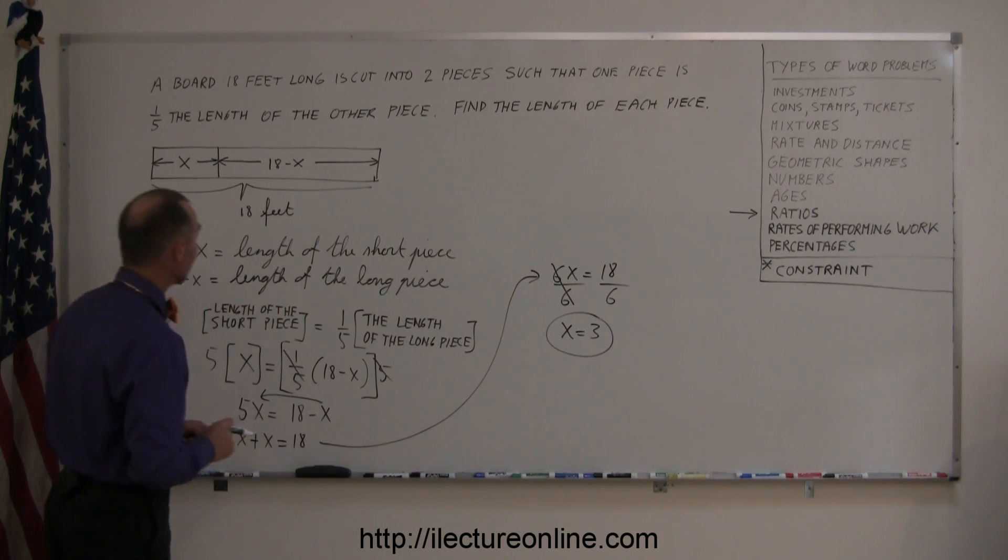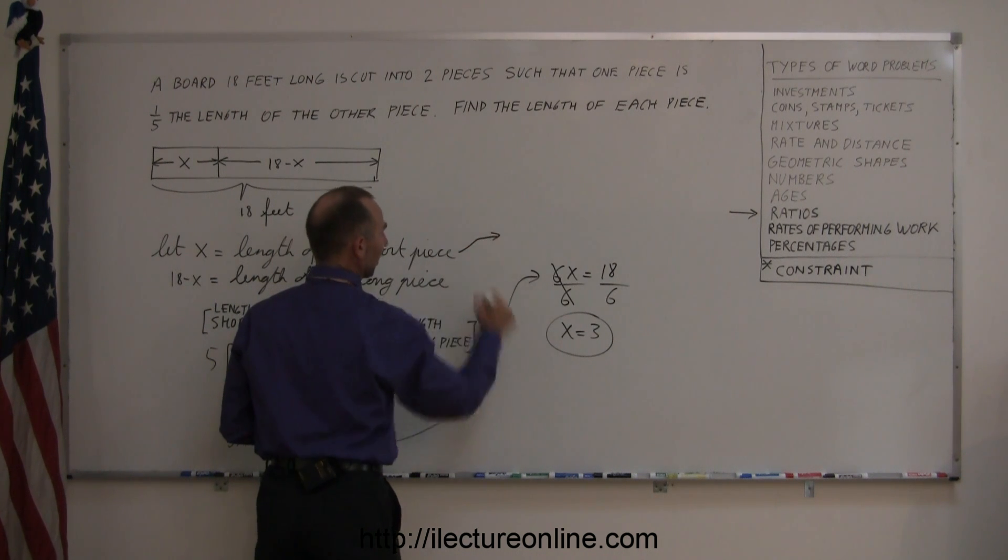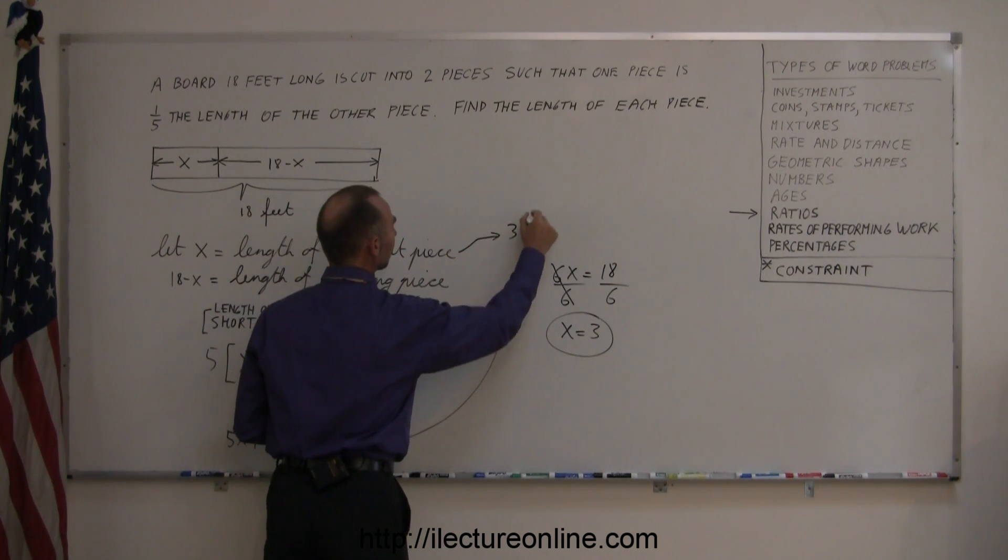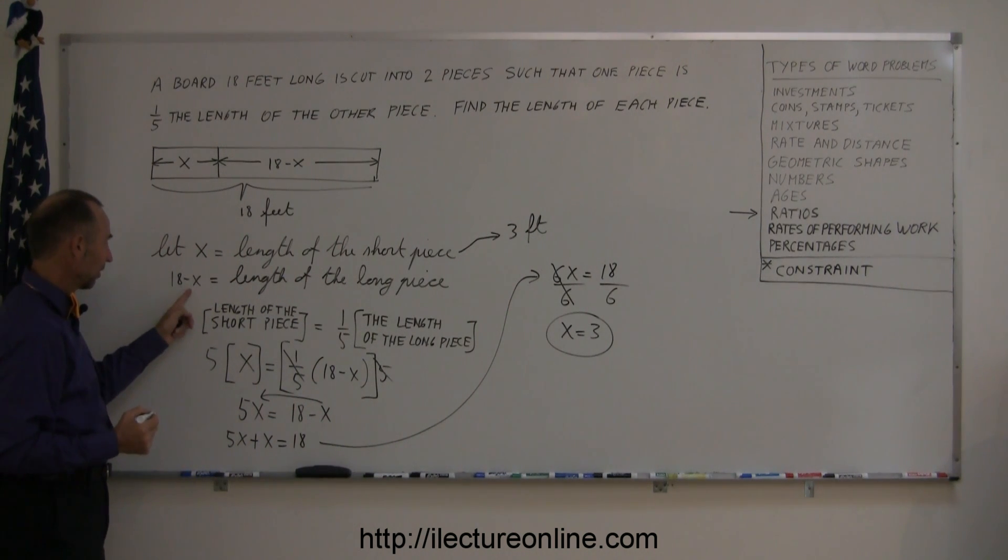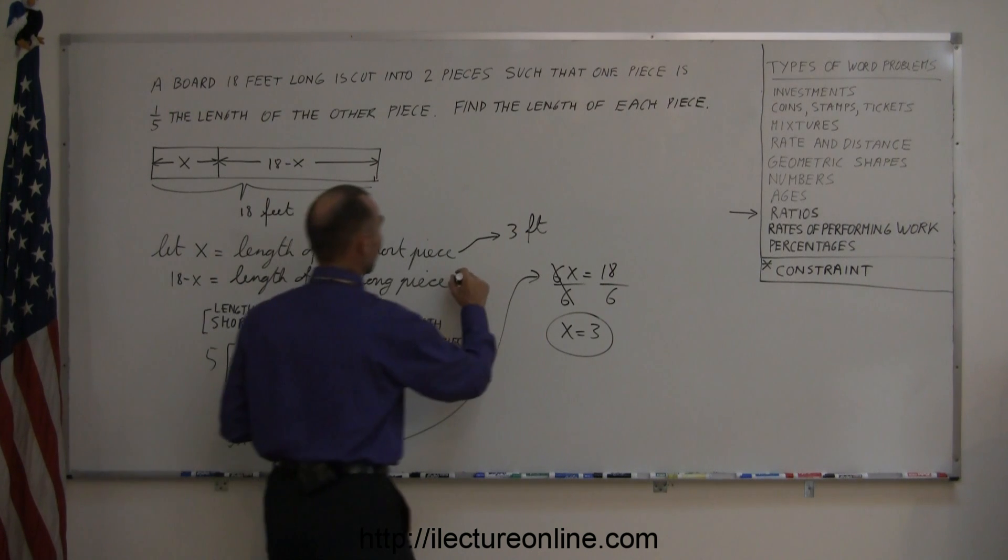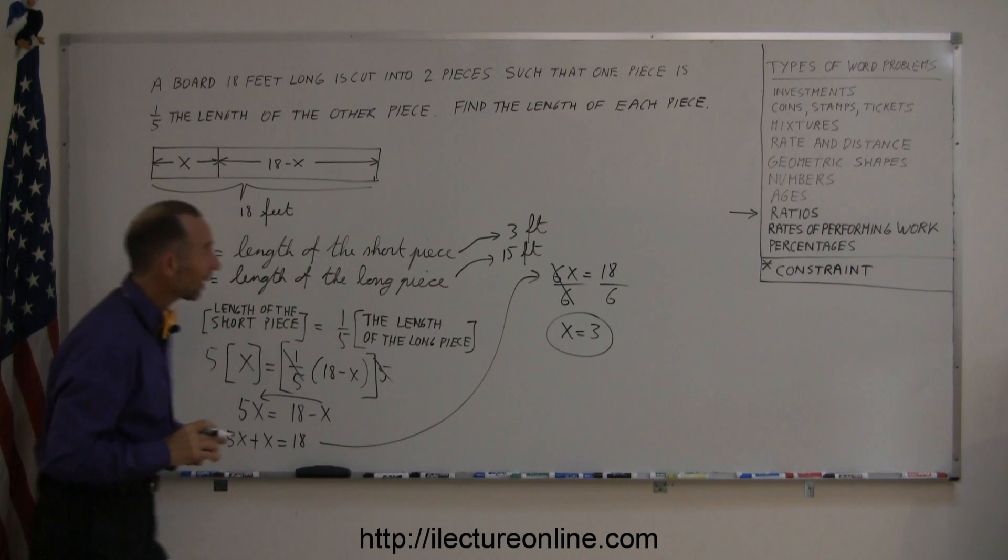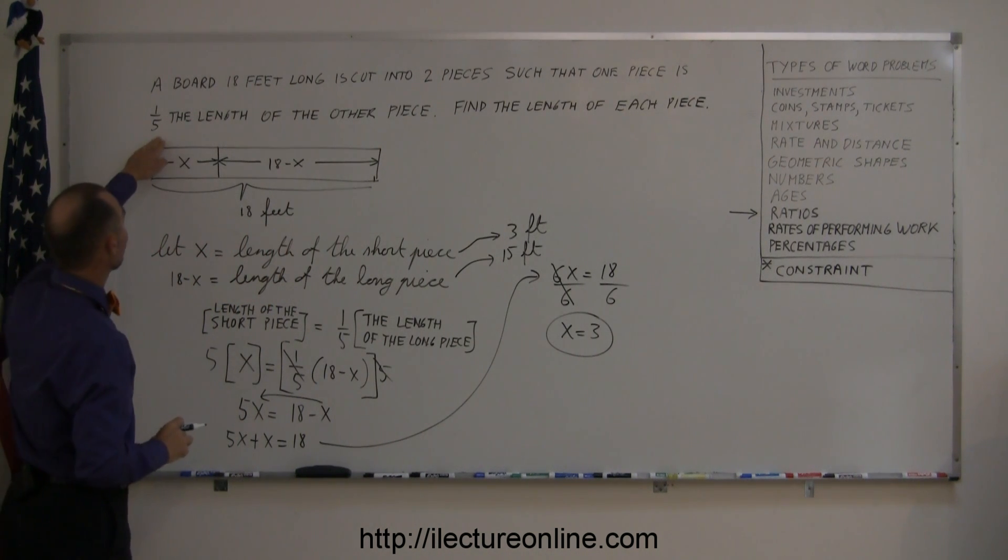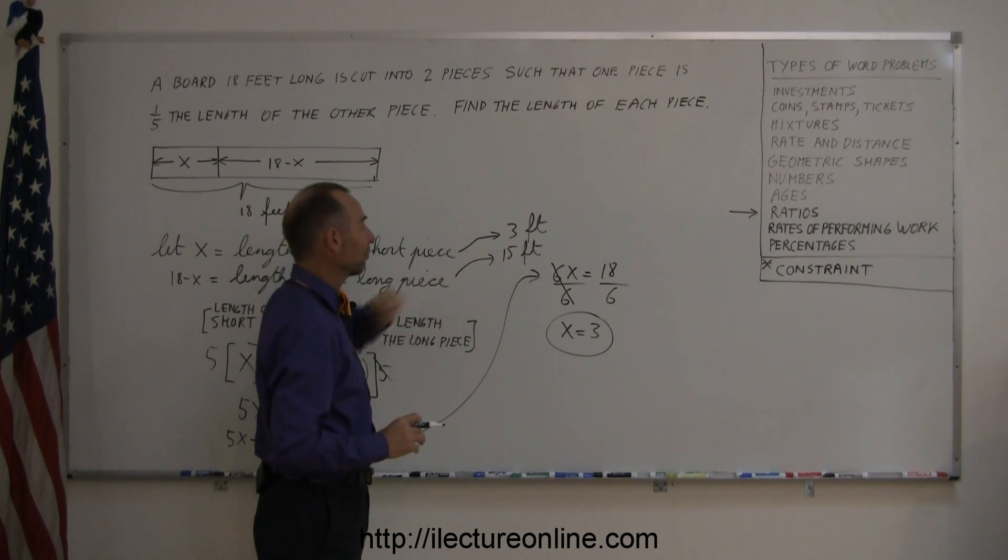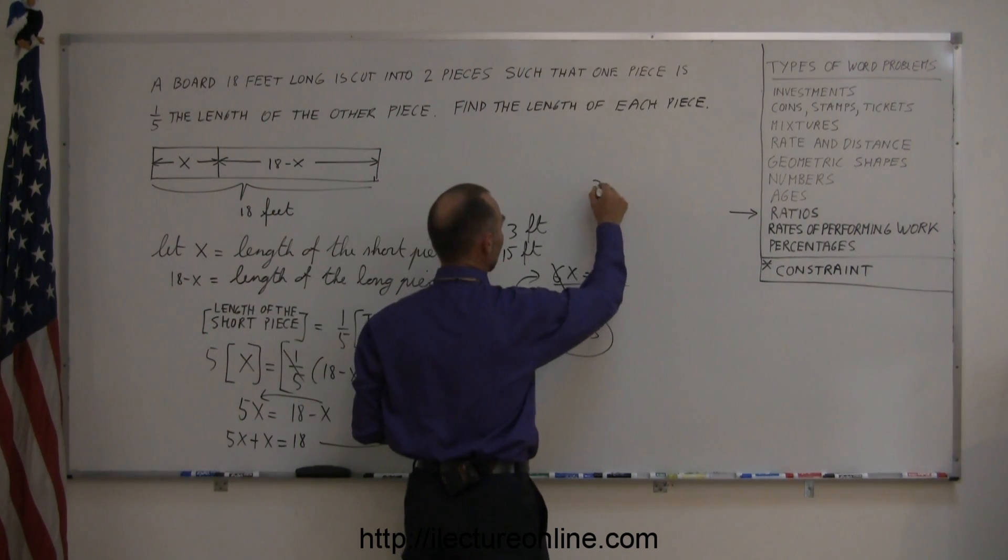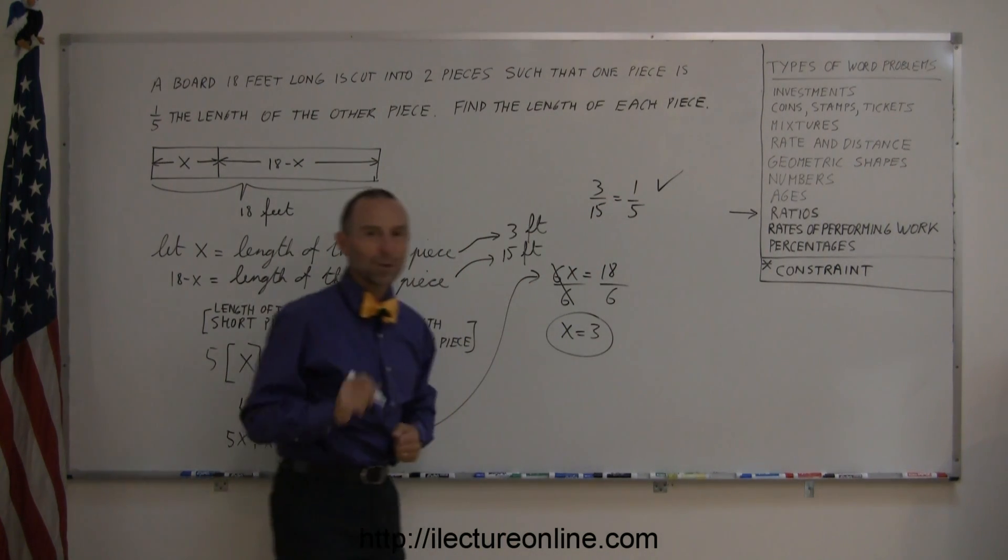Going back to our definition, since x represented the length of the short piece, that means the short piece was 3 feet long. And 18 minus x, since x is 3, that's 15, so 15 feet should be the length of the long piece. And just to make sure we did this correctly, is the short piece exactly one-fifth the length of the long piece? 3 is exactly one-fifth of 15, because 3 divided by 15 is the same as 1 over 5. And bingo, we know we did it correctly.